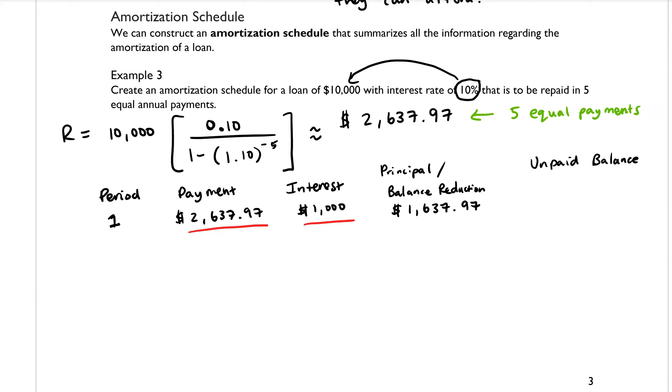And then the last column that we can look at, we could call it the unpaid balance. And so if we initially had a loan value of $10,000, then in order to get the unpaid balance after the first period, we would do $10,000 minus the balance reduction amount. So if we do that subtraction, then we end up getting